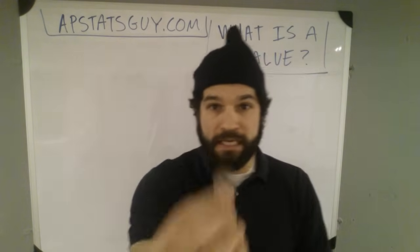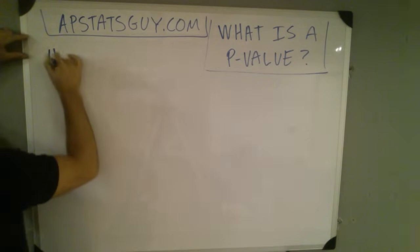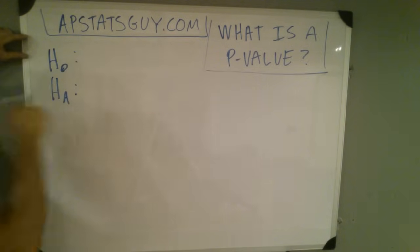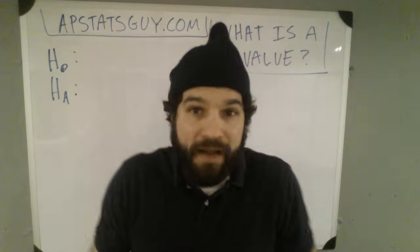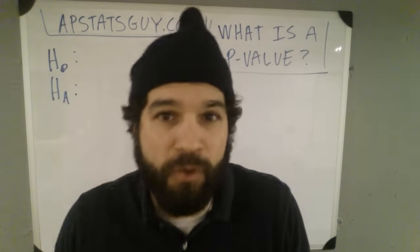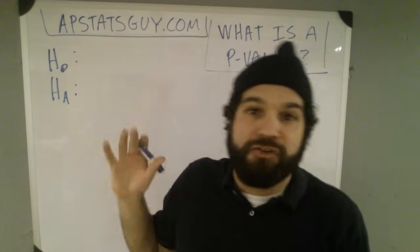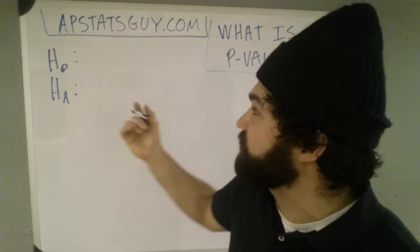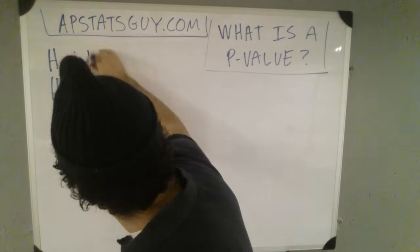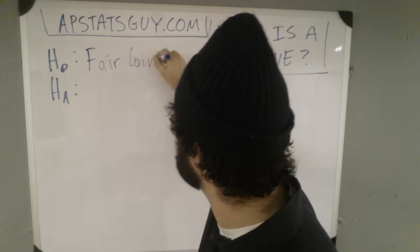I've got a coin here. We generally make a null and an alternative hypothesis — a Ho and a Ha. Your null hypothesis is always the 'nothing weird's going on' hypothesis. It's the boring hypothesis, the no-trickery hypothesis. So we're going to talk about this coin. We're going to say it's a fair coin, and my null hypothesis is that everything's hunky-dory — fair coin.